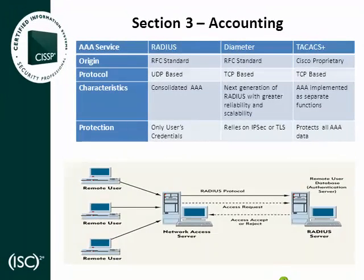The CBK requires that candidates be familiar with technologies that combine and facilitate the components of access control — authentication, authorization, and accounting. These technologies are known as AAA servers. The three main AAA servers referred to in the CBK are: RADIUS, TACACS Plus, and Diameter. RADIUS stands for Remote Dial-In User Service. It provides consolidated authentication, authorization, and accounting functions for dial-up and wireless connections. RADIUS is implemented based on the client-server model where the network access server, NAS, operates as a RADIUS client.